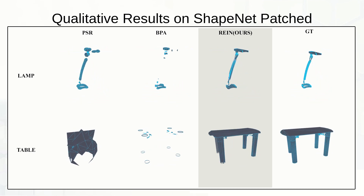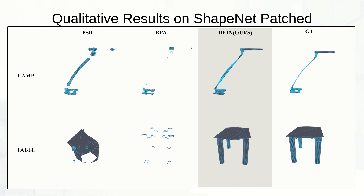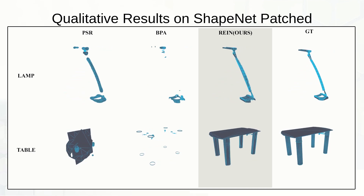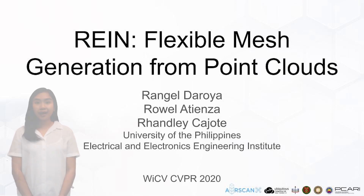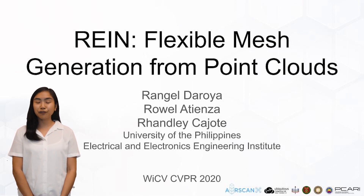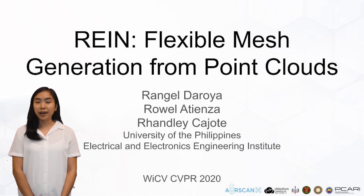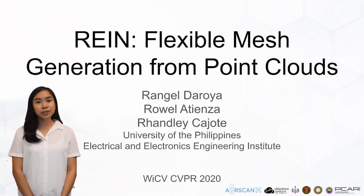Results of ShapeNet patch again illustrate RAIN's ability to represent both sharp and curved contours. In conclusion, our network can accept a flexible number of points as input and can reconstruct meshes with varying point distributions. Continuous feedback from previous predictions and incorporating the latent vector of the global structure improves the mesh generation process.